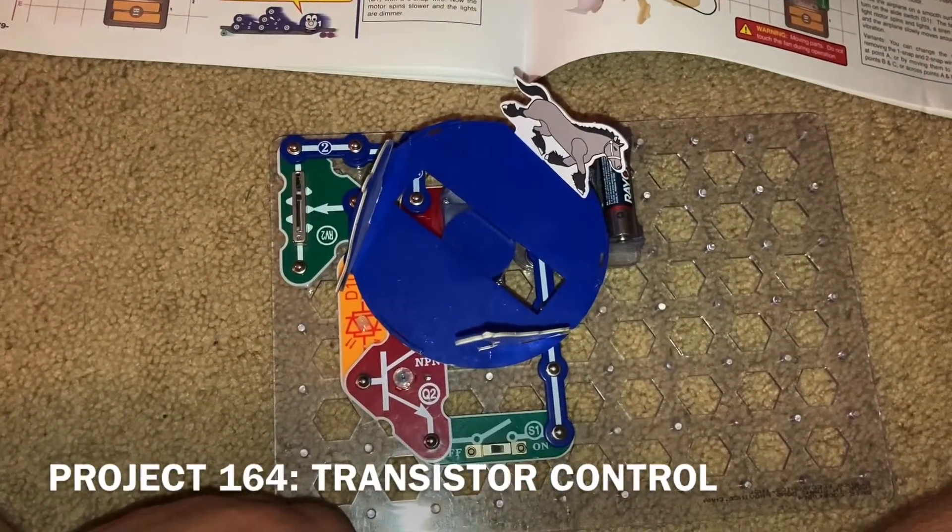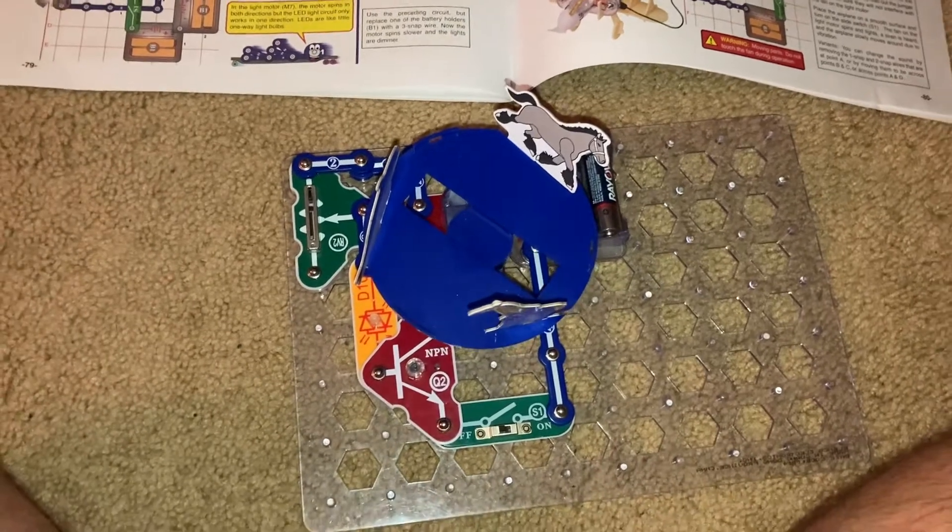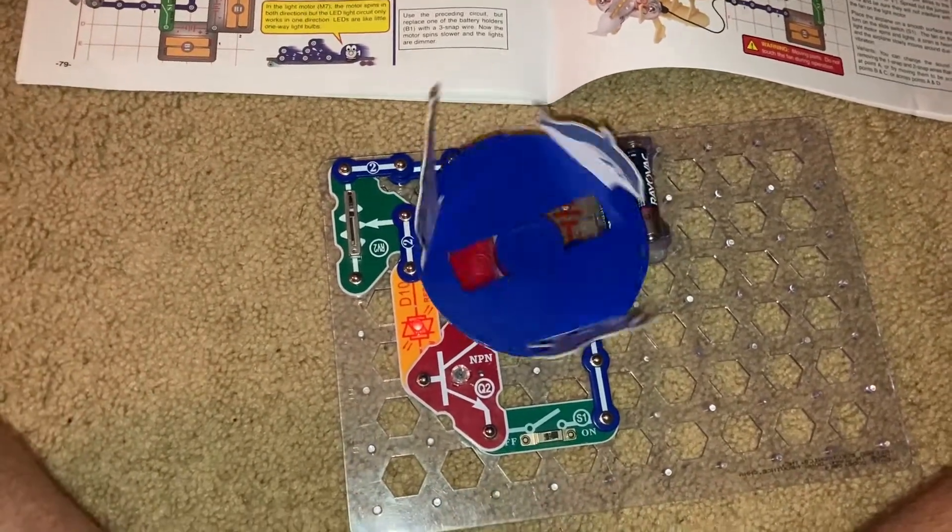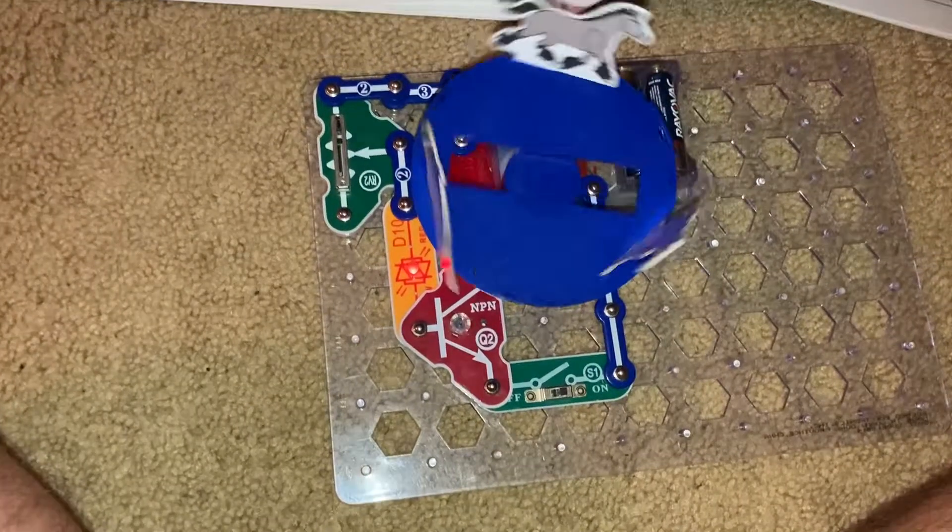Project 164 is transistor control. I'm going to turn on the slide switch, the merry-go-round spins, and the bicolor LED comes on.